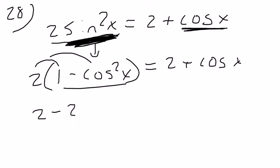I get 2 minus 2 cosine squared. That still equals 2 plus cosine. Subtract 2 from both sides. You're going to see that the 2's cancel here and here.